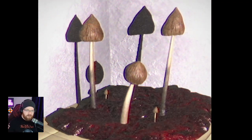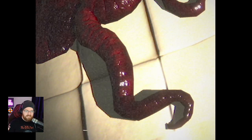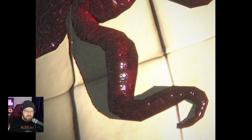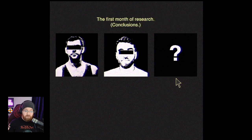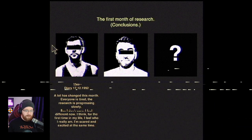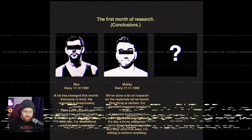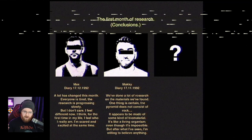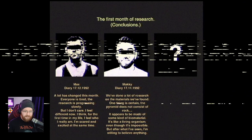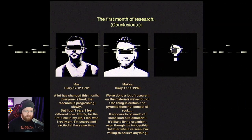Mushrooms in goop. The first month of research. A lot has changed this month. Everyone is tired. The research is progressing slowly. But I don't care - I feel different now. For the first time in my life, I feel who I really am. I'm scared and excited at the same time. Same, Max. We've done a lot of research on the materials we found. One thing is certain: the pyramid does not consist of rock. It appears to be made of some kind of biomaterial - it's like a living organism. Though that's impossible, but after what I've seen, I'm willing to believe anything. And the observer: Something has clearly changed in Object A. Object B doesn't notice it yet - he's too immersed in his work. Object A has emotional outbursts, sudden mood swings, skin rashes, which he does not pay attention to. Someone's got the mushrooms.